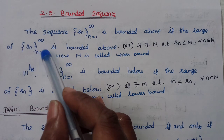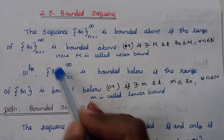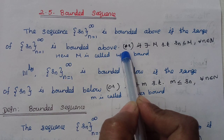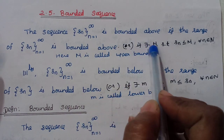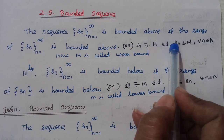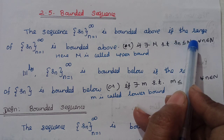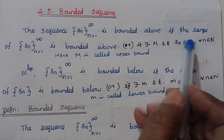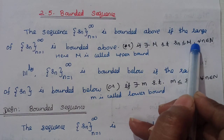The sequence is bounded above if there exists a real number M such that Sn ≤ M for every n belonging to the natural numbers. We call M the upper bound.